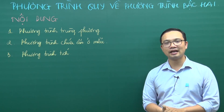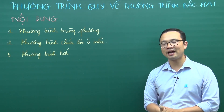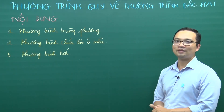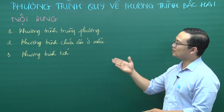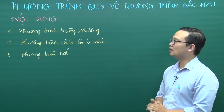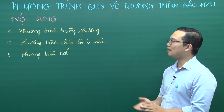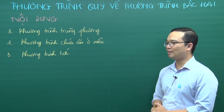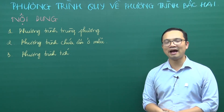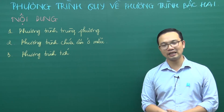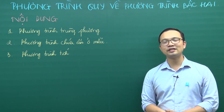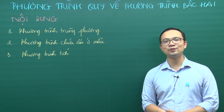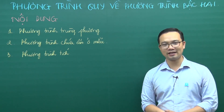Các dạng này là như thế nào? Bài của chúng ta hôm nay sẽ gồm 3 phần. Phần thứ nhất là phương trình trùng phương. Phần thứ 2 là phương trình chứa ẩn ở mẫu. Và phần thứ 3 là phương trình tích. Giờ chúng ta sẽ cùng nhau đi vào nội dung chi tiết.